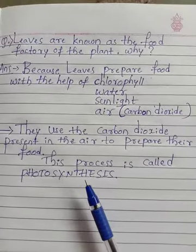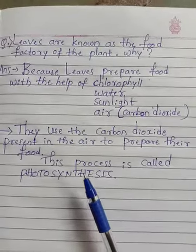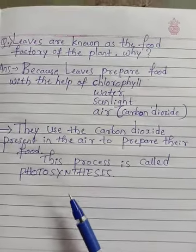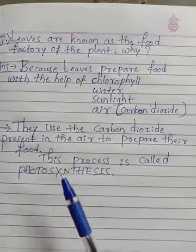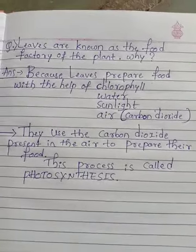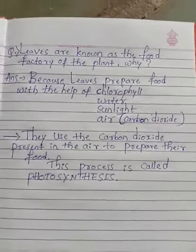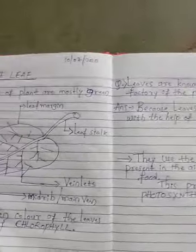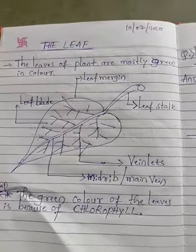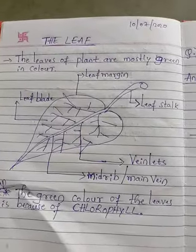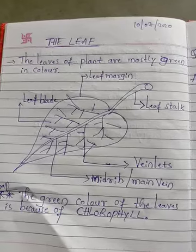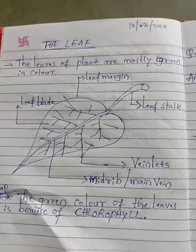As plants prepare food, they also produce oxygen which is released into the air. This helps purify the air. This is about the leaf — I hope you have understood all the concepts of the parts of the leaf. Thank you, students.